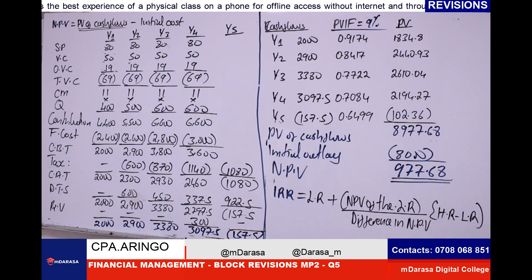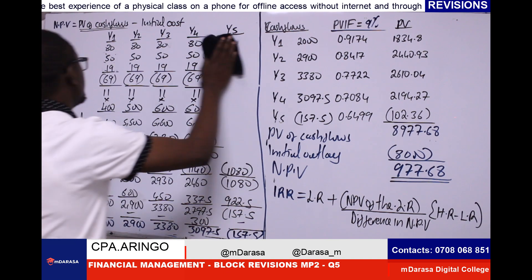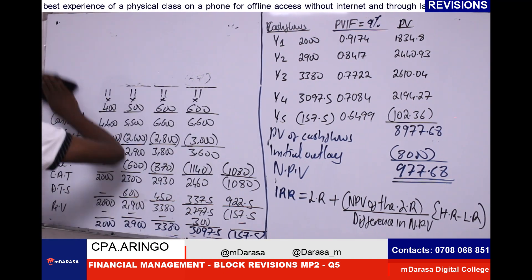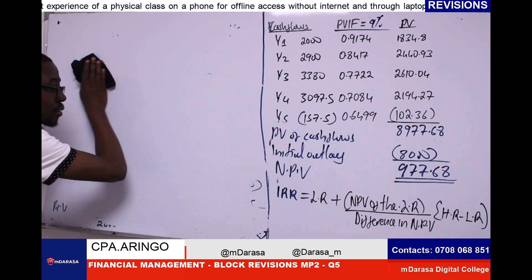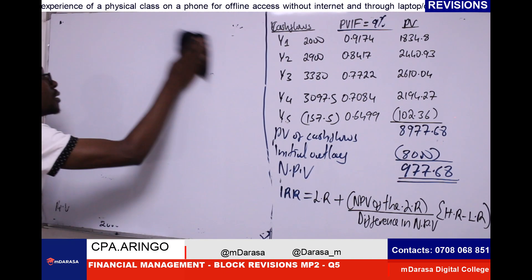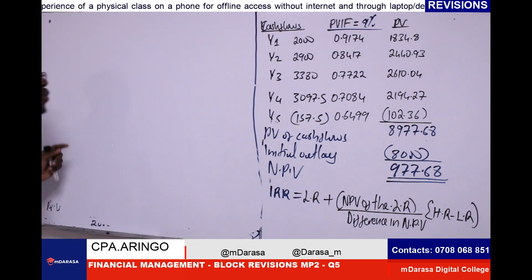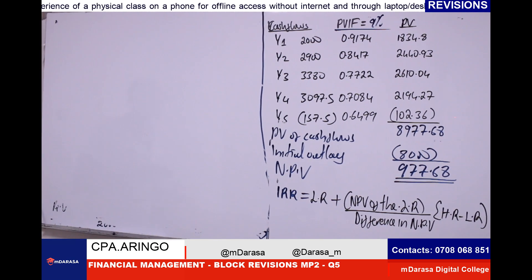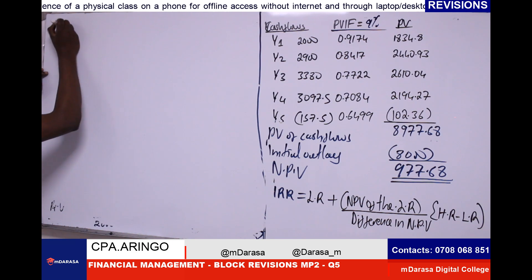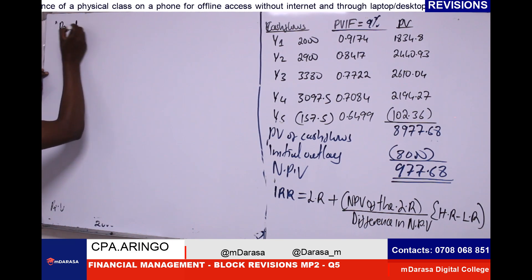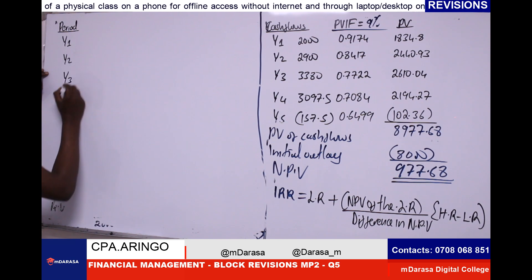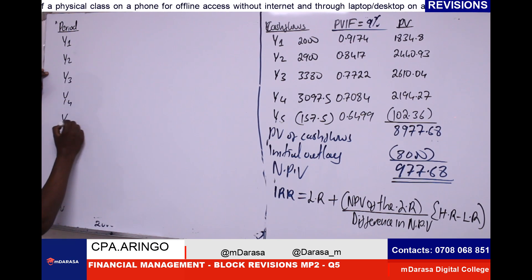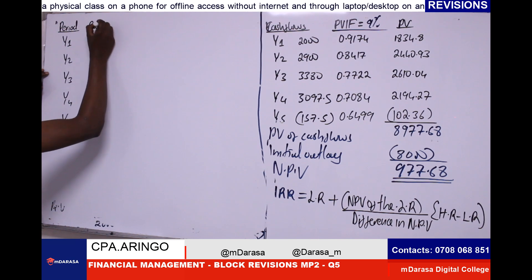At this point, with a lot of confidence, we prepare the NPV at a new rate we are going to select. We select the NPV with a different rate. Our cash flows will remain the same — period, year one, year two, year three, year four, year five. Our cash flows will not change.